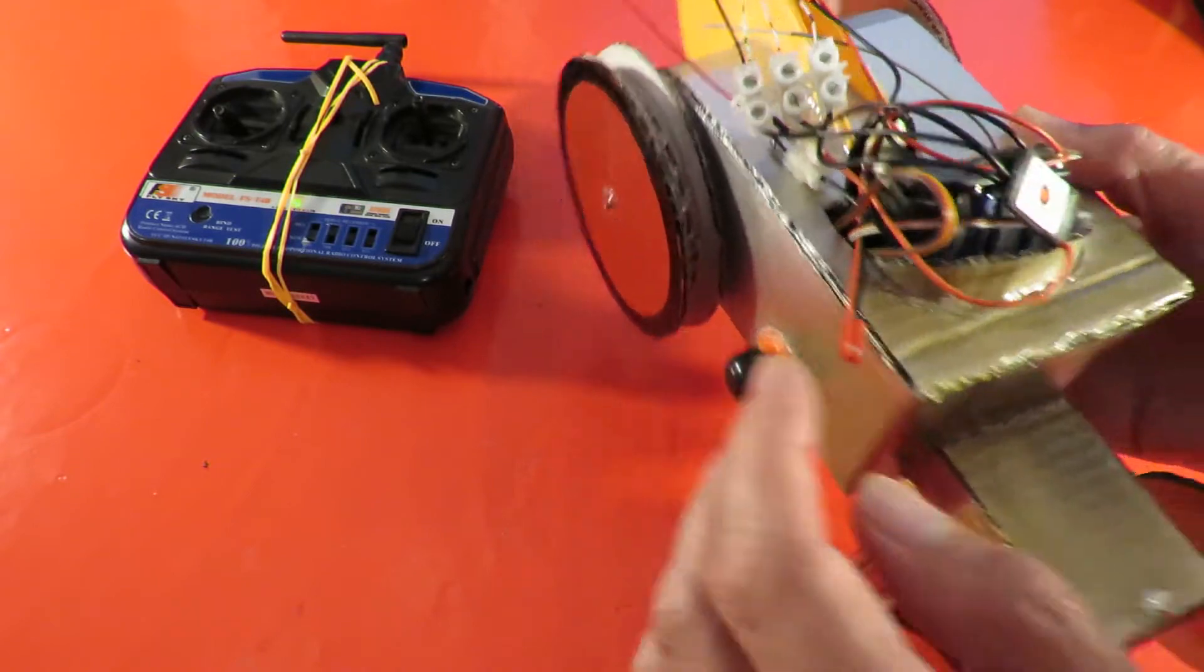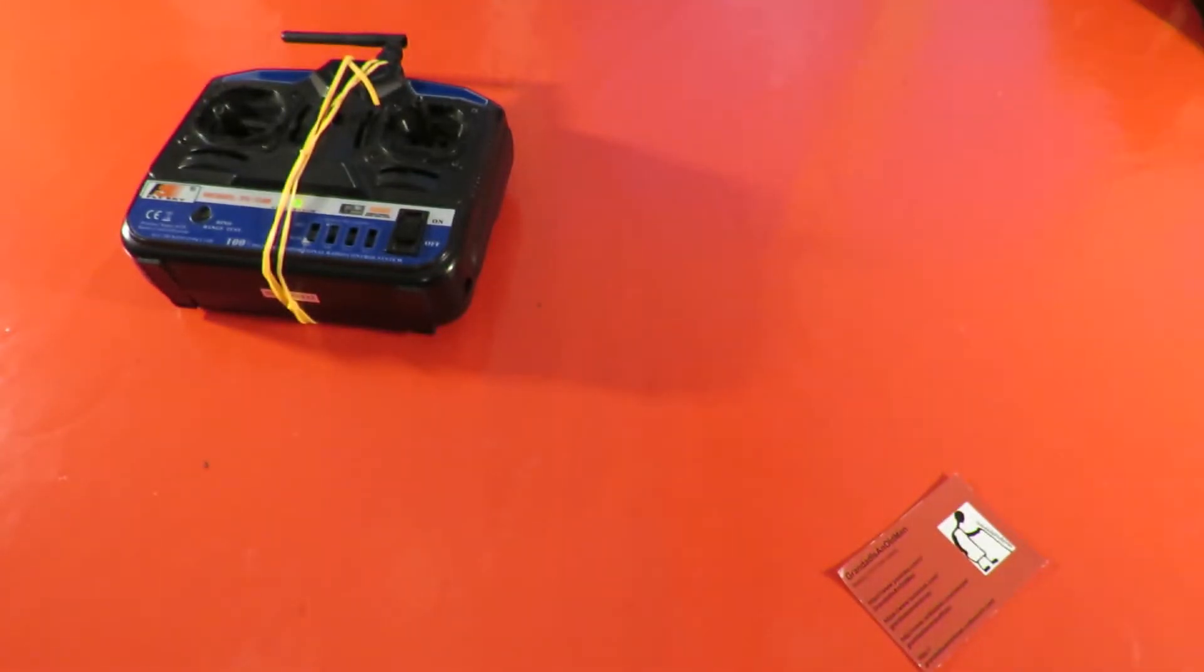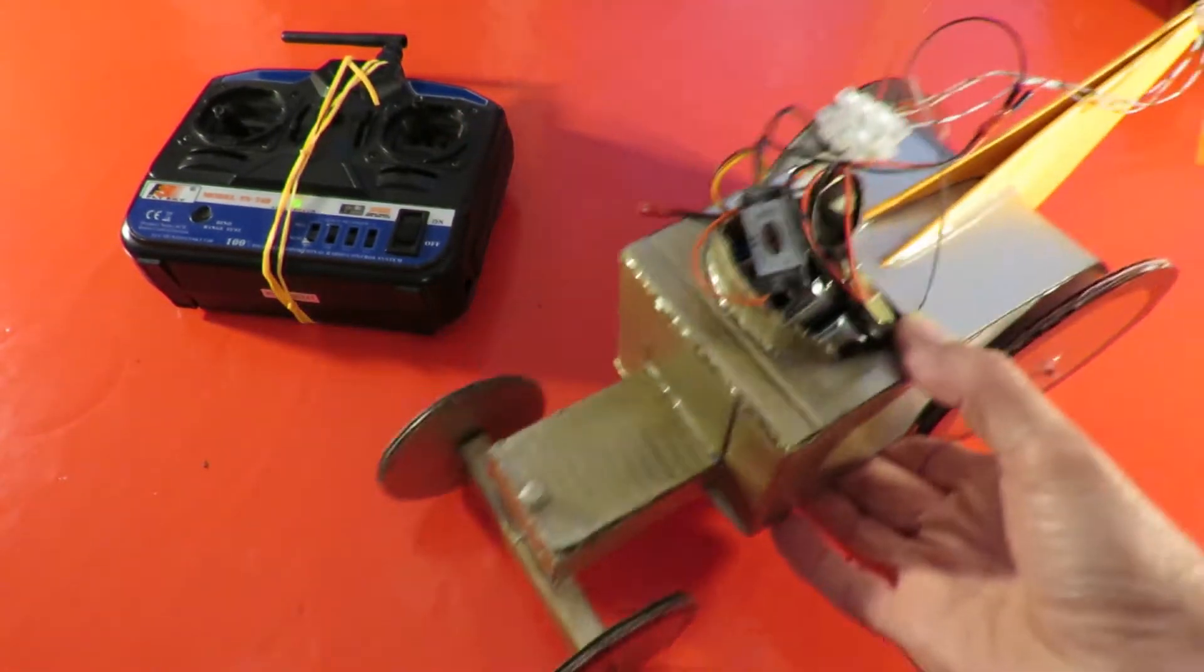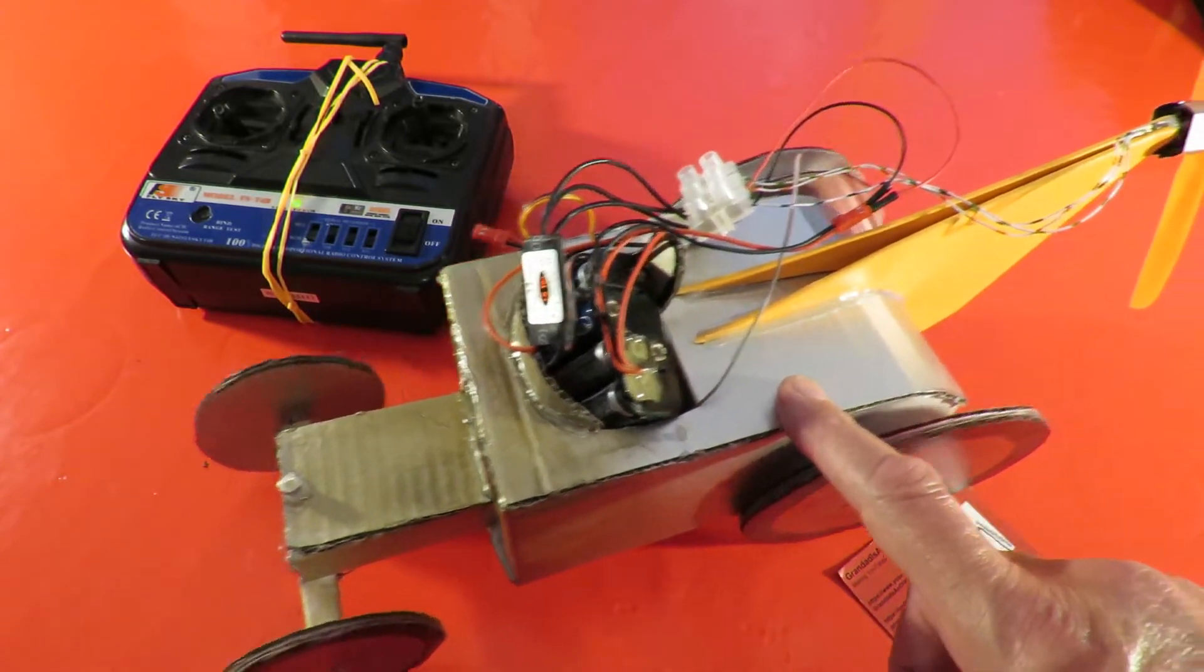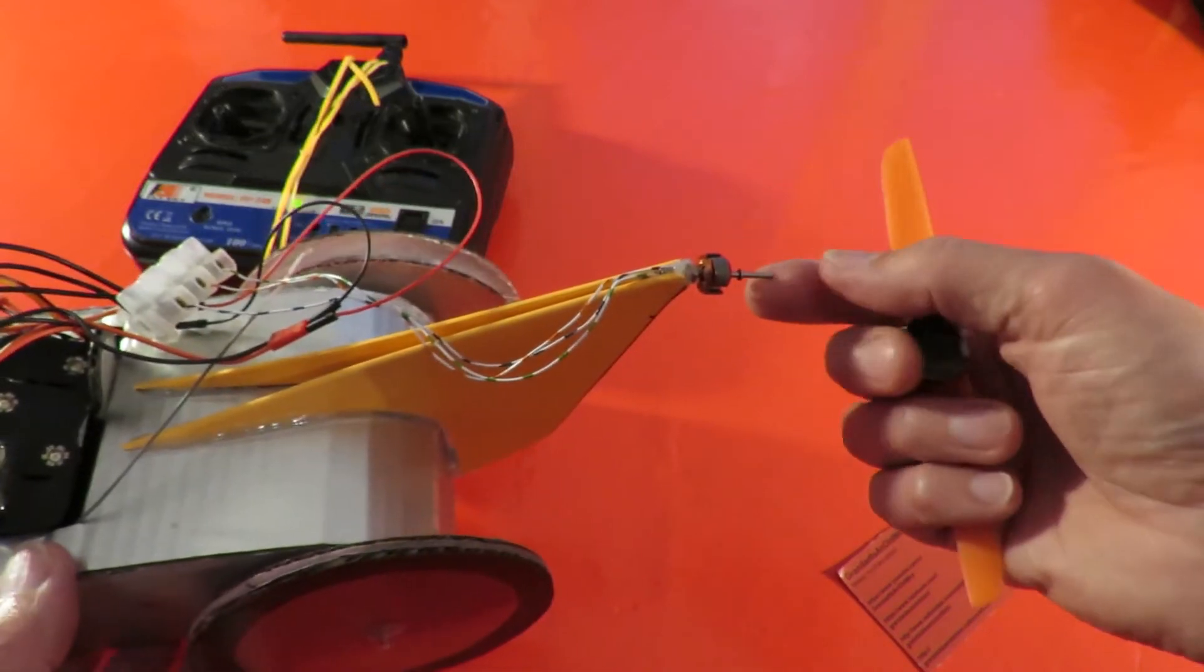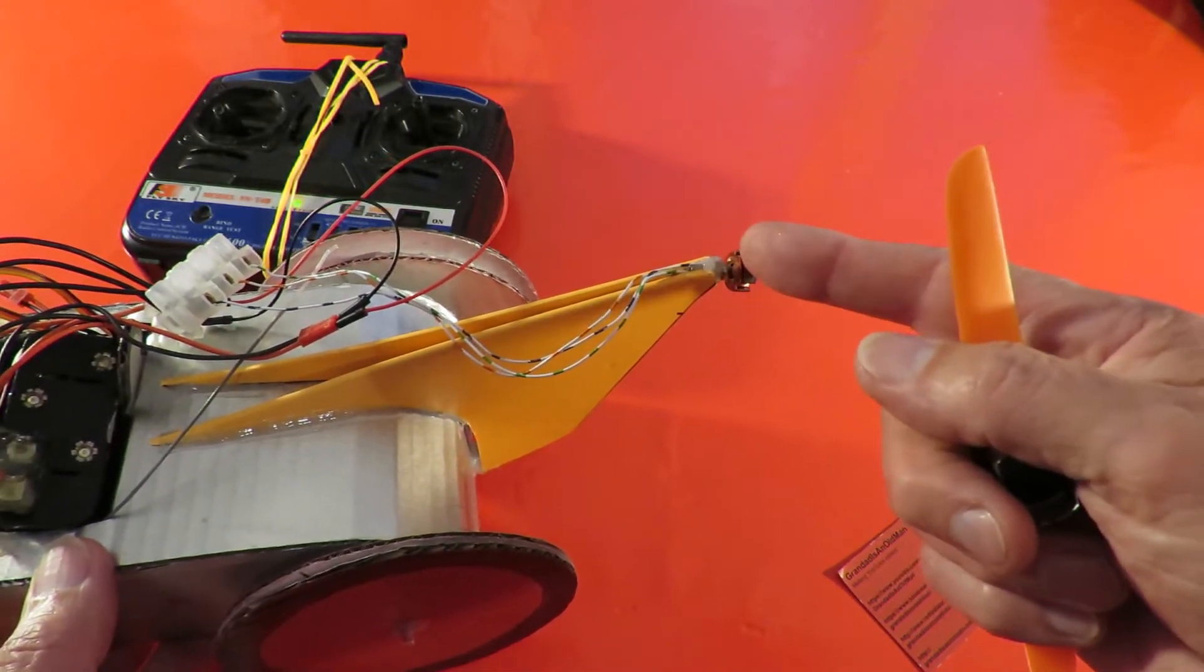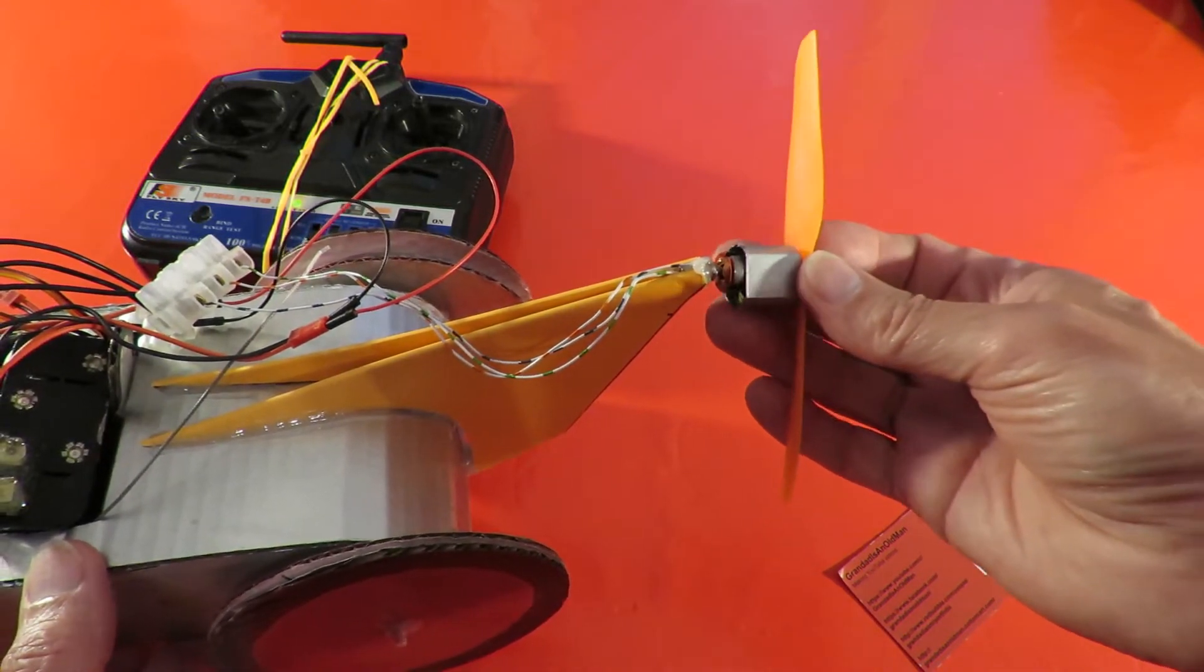And then we got a servo in there. Can we see it underneath? Yeah, servo underneath to do the steering. That's just been sitting around, but what I've done here is I was playing around with a brushed motor, making it into a brushless motor in one of my previous videos, and I did say I'd try putting it on a car.